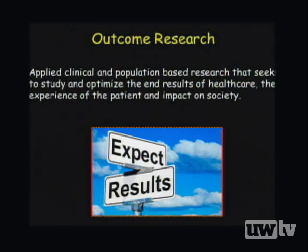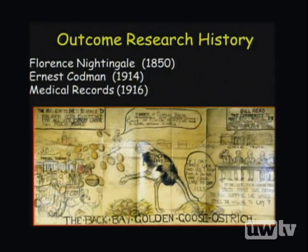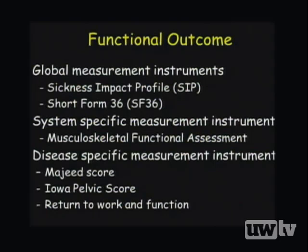The exact origin of outcomes research is unknown, but it dates back to Florence Nightingale's work in the 1850s studying wound infections and mortality. In the early 1900s, Ernest Codman, an orthopedic surgeon in Boston, stressed the importance of reporting end results rather than just the number of cases performed. The advent of medical records around the same time allowed physicians to identify factors associated with different outcomes.